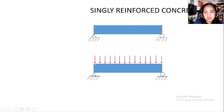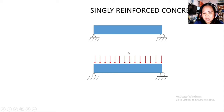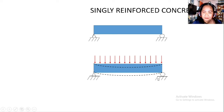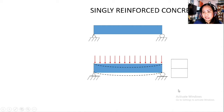Let's say we apply a uniformly distributed load on this beam. If we exaggerate the scenario, the beam will deflect and the maximum deflection occurs at the midspan. That is why the beam really needs reinforcement bars or steel to resist tension so it won't fail because of the loadings.